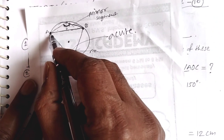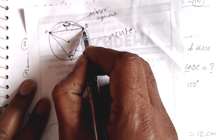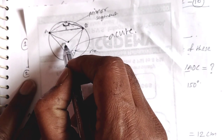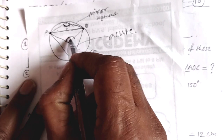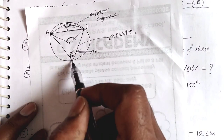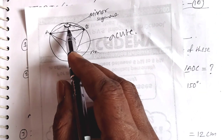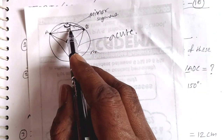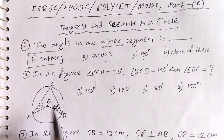The chord is related to the center of the circle and the angle at the center. So we have three angles. First, the angle in the minor segment is the obtuse angle. So this is the answer to the first question.